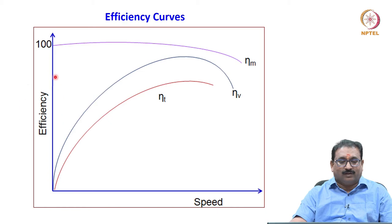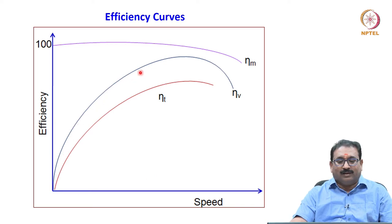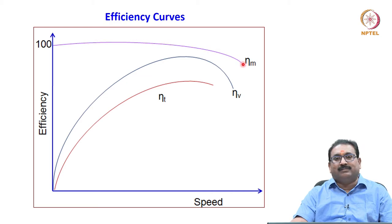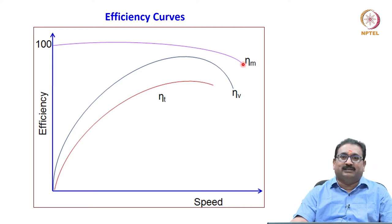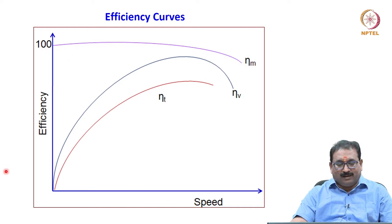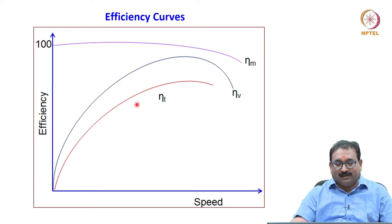You will see efficiency along the y-axis and speed along the x-axis. Volumetric efficiency goes on increasing and later decreases. Mechanical efficiency starts at 100% and as speed increases it goes on decreasing due to rubbing action between seals, mating elements, and fluid. Total efficiency is obtained by combining volumetric and mechanical efficiency together. Please understand the curve of efficiency versus speed.